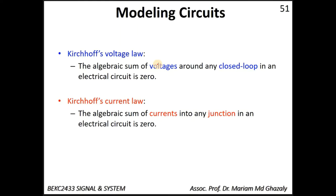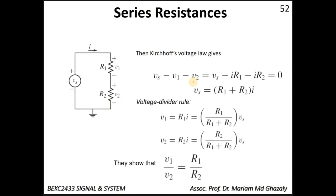To answer example 9, we are going to model the circuit. There are two different approaches. The first uses Kirchhoff's Voltage Law: the algebraic sum of all voltages around a closed loop equals zero. The second uses Kirchhoff's Current Law: the algebraic sum of currents into a junction equals zero.